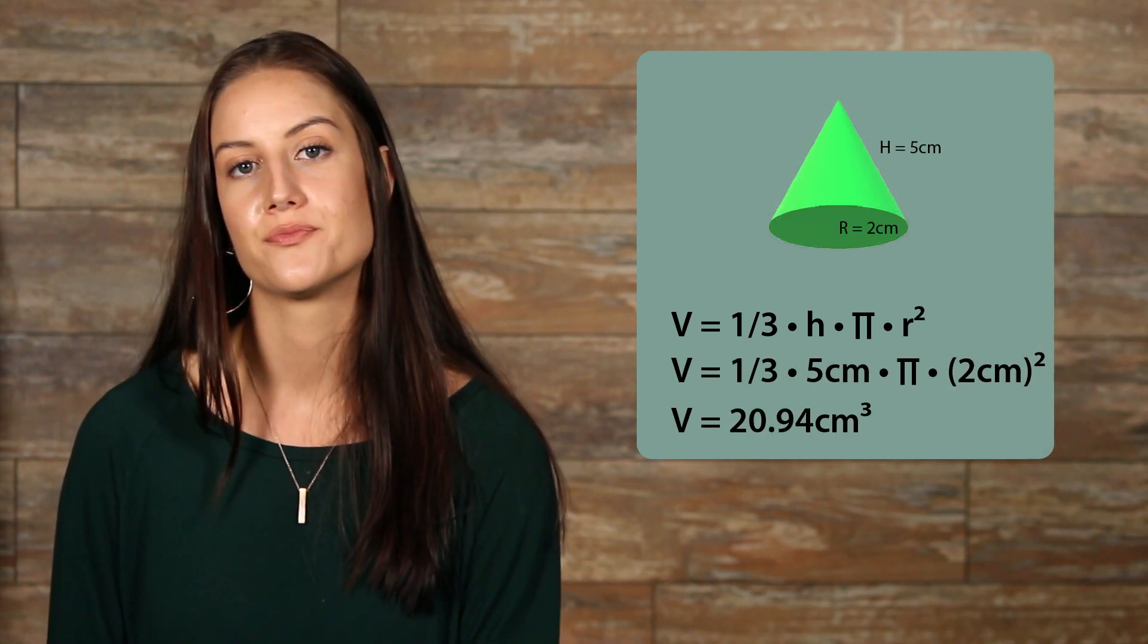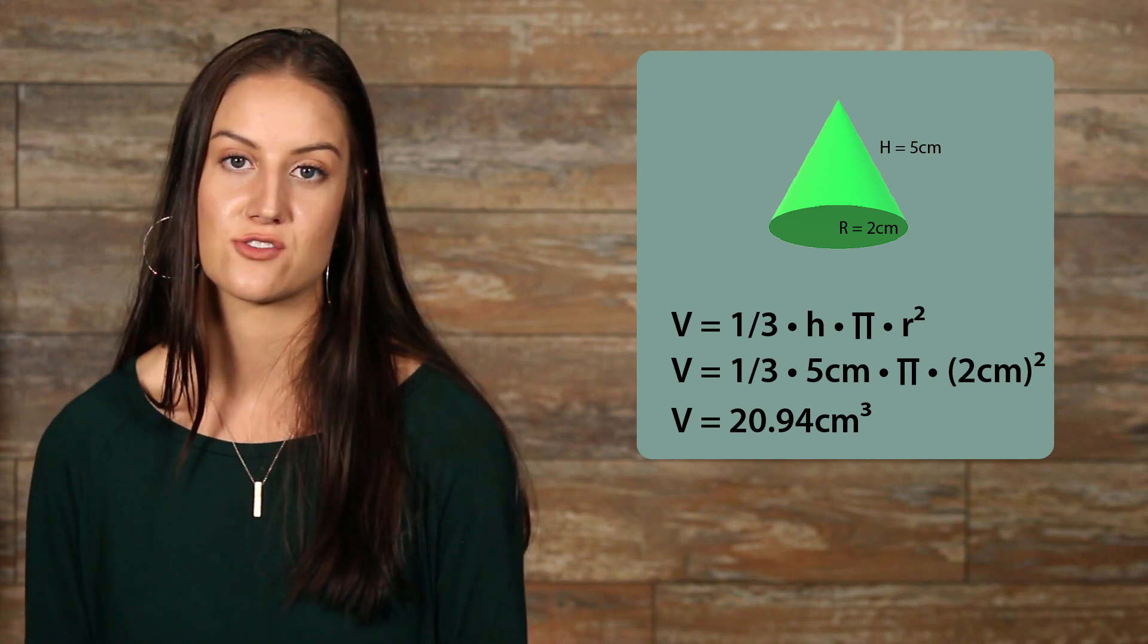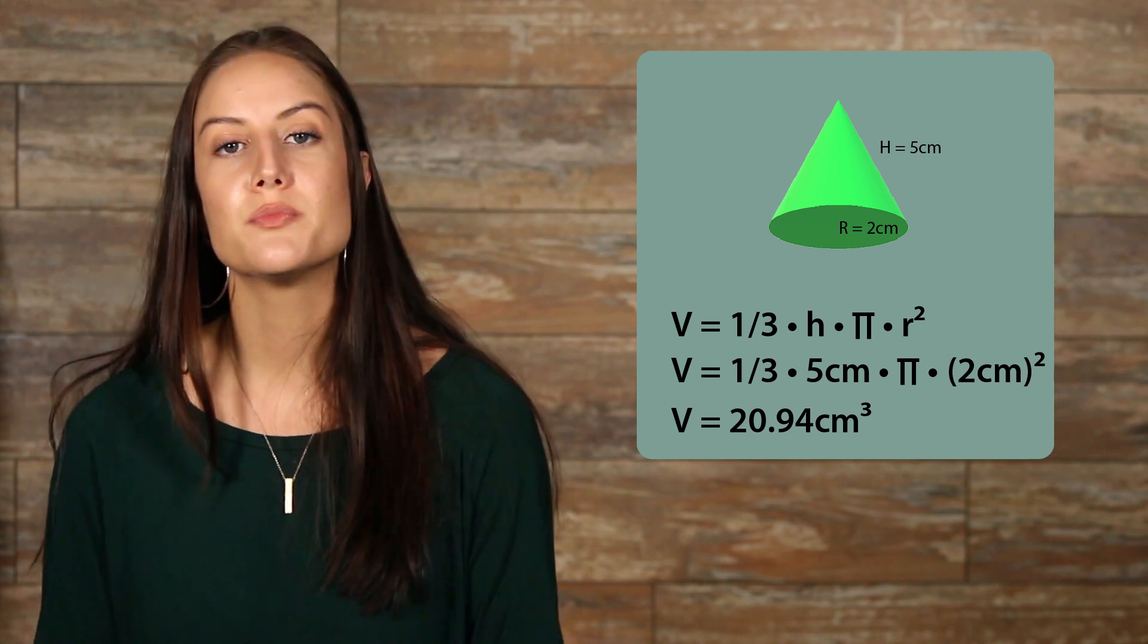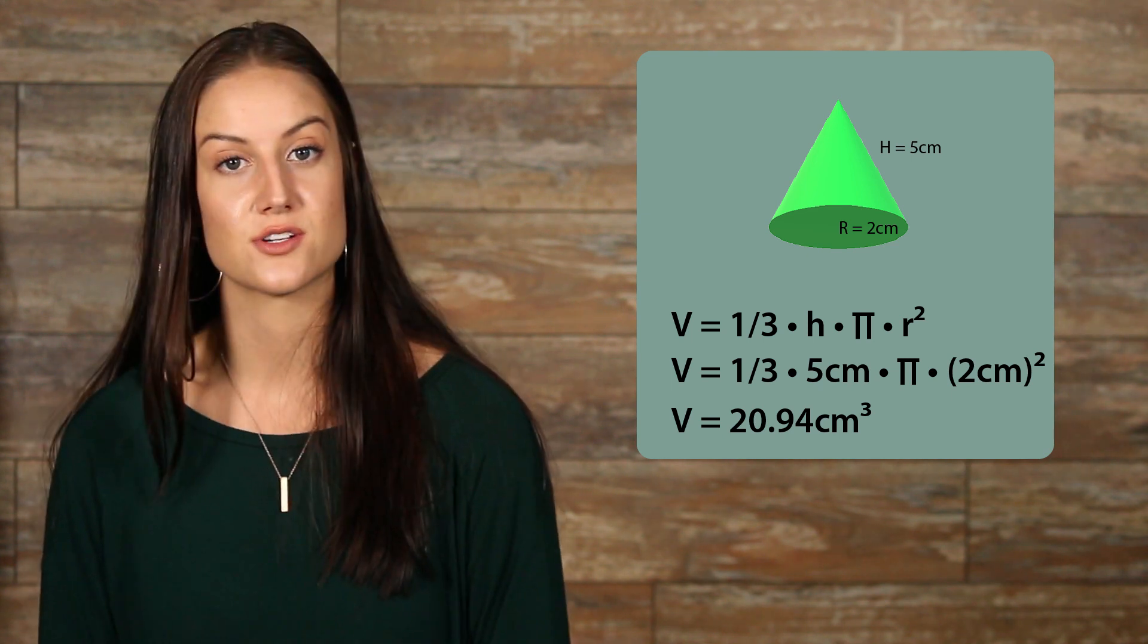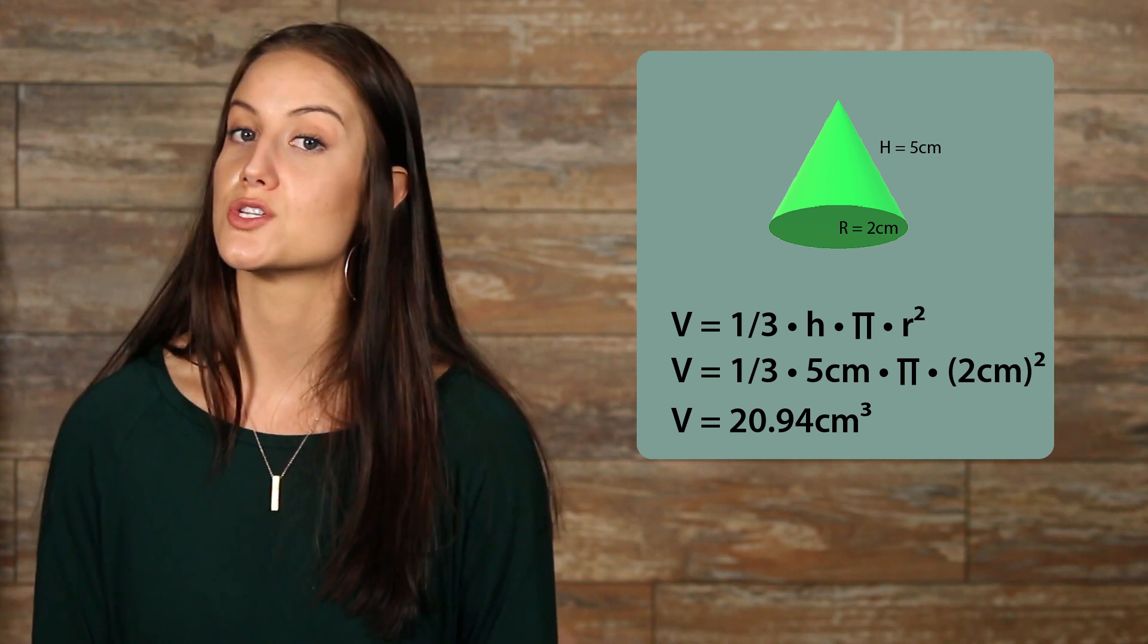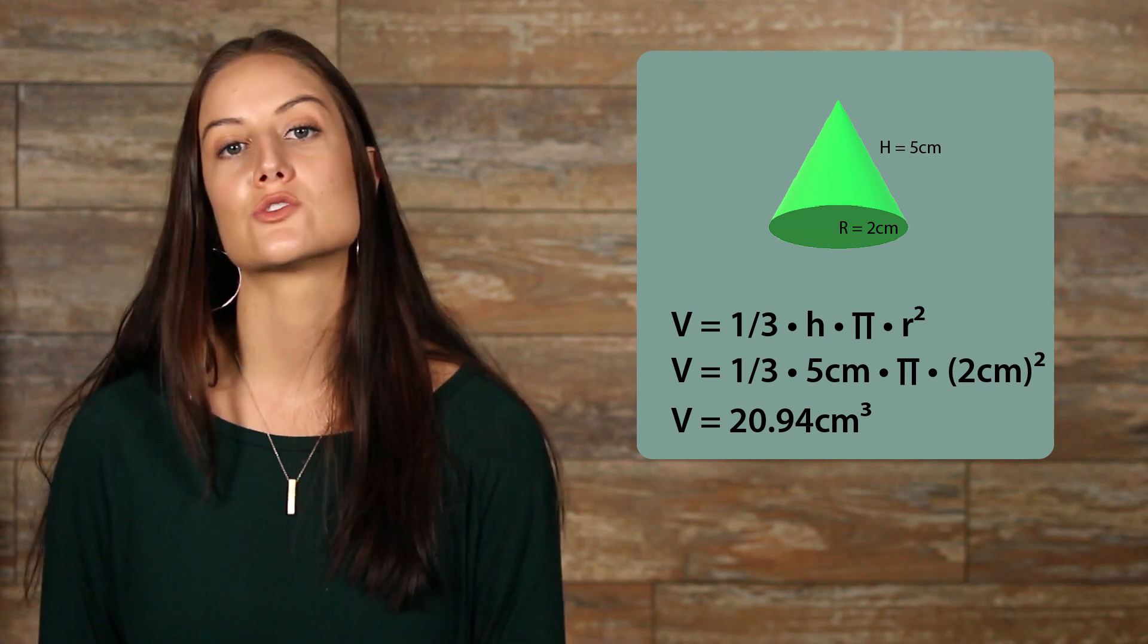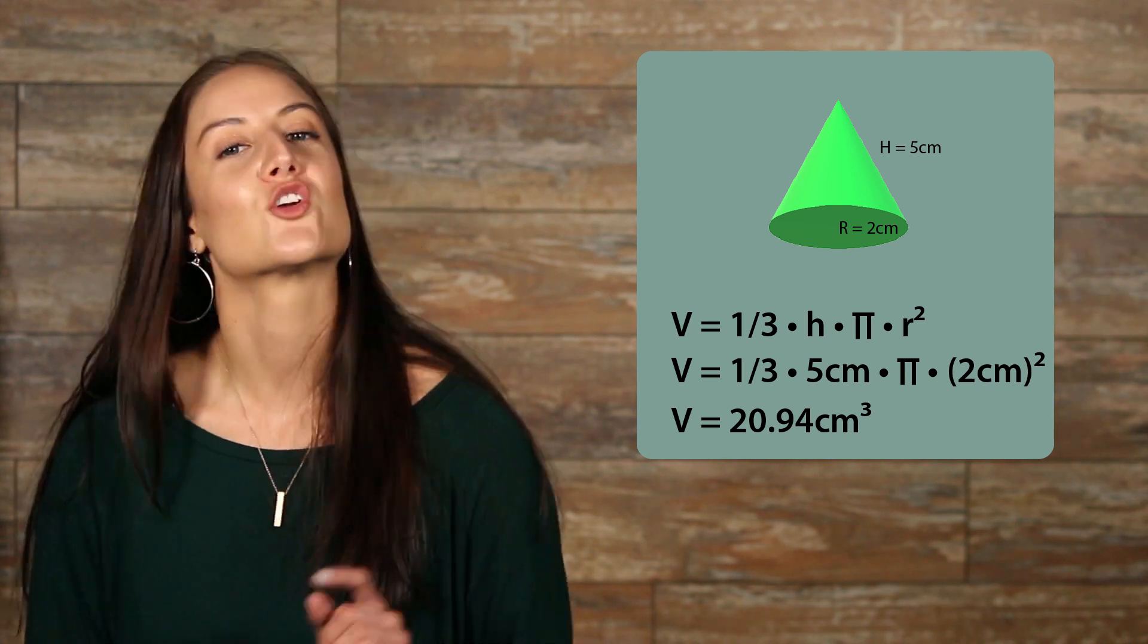Here's an example. Here we can see that we have a height of 5 centimeters and a radius of 2 centimeters. Once we plug in all of our numbers, we have volume equals 1 third times 5 centimeters times pi times 2 squared. When solved, we have volume equals 20.94 centimeters cubed.